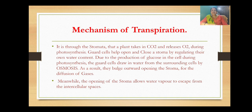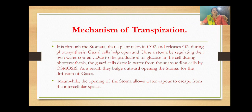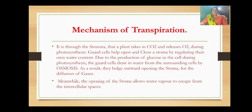The guard cells help open and close the stoma by regulating their own water content. Guard cells are the surrounding bean-shaped cells present in the epidermal layer of the leaves. Since they are bean-shaped, guard cells also contain chlorophyll, so they will also photosynthesize. The opening and closing mechanism is performed due to the water content present in the guard cells.